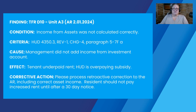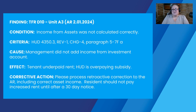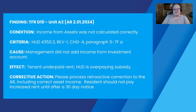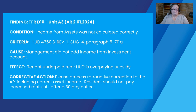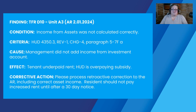Here's an example of what it would look like. You have the finding — in this case it was a finding in the tenant file review, that's TFR. D10 refers to the question and the unit and certification number. The condition was income from assets was not calculated correctly. Criteria references the part of the HUD guidance that this finding comes from. The cause was that management didn't add income from an investment account. The effect was tenant underpaid rent, and the corrective action is going to be a certification correction.